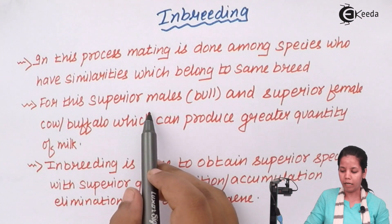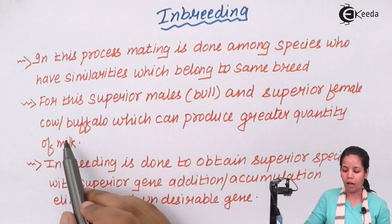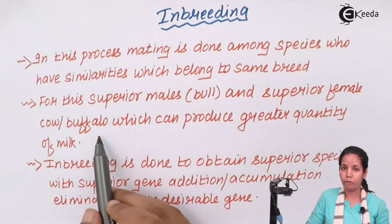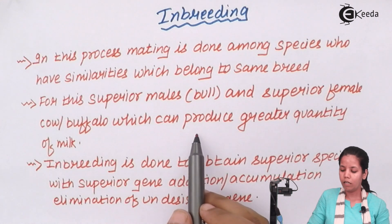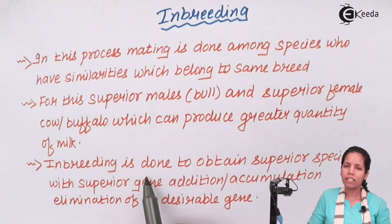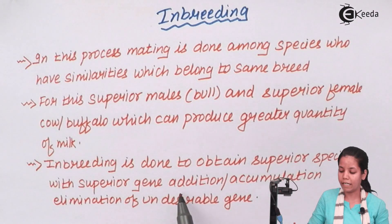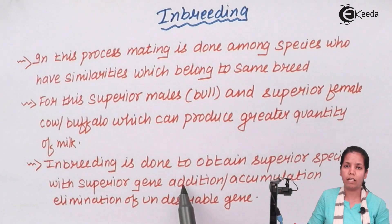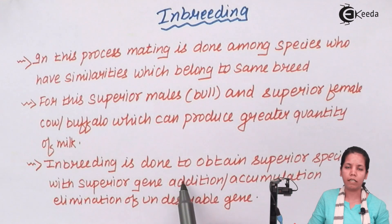For this, a superior male — which is a bull — and a superior female, which could be a cow or a buffalo depending upon the requirement, is selected — one that produces greater quantities and quality of milk. During inbreeding, superior species which have superior genetic additions or gene accumulation are obtained after four or five continuous generations, and the undesirable traits which are not required are slowly eliminated in this process.